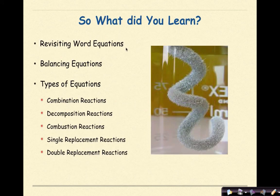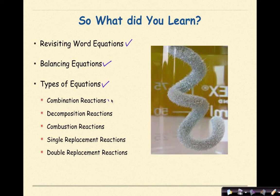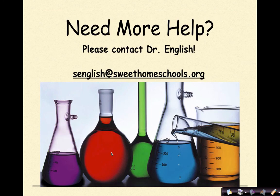What did you learn? We revisited word equations and how to translate them into formula equations. We talked a lot about balancing equations and did a lot of practice. We looked at different types of equations: specifically combination reactions, decomposition reactions, combustion reactions, single replacement reactions, and double replacement reactions. Need more help? Feel free to contact me. Have a great day.